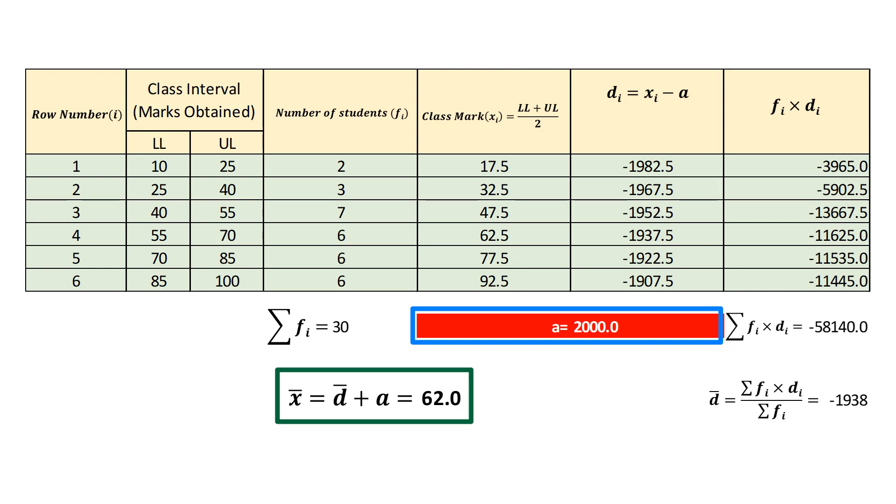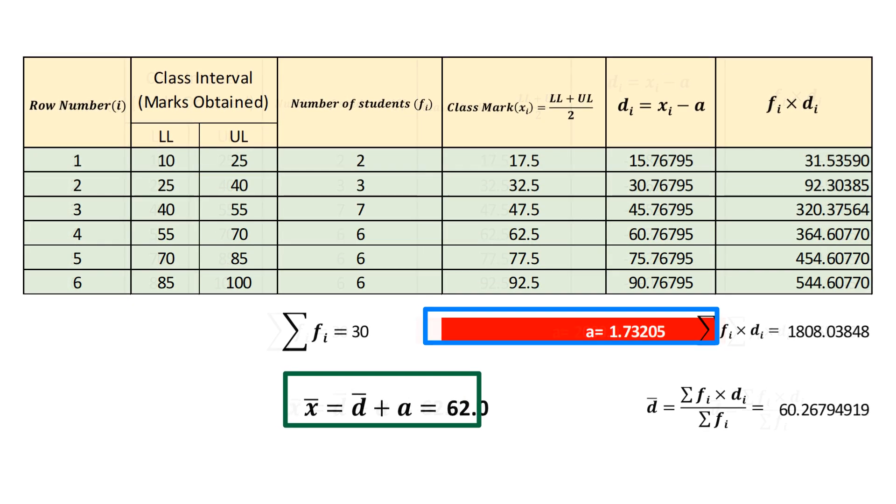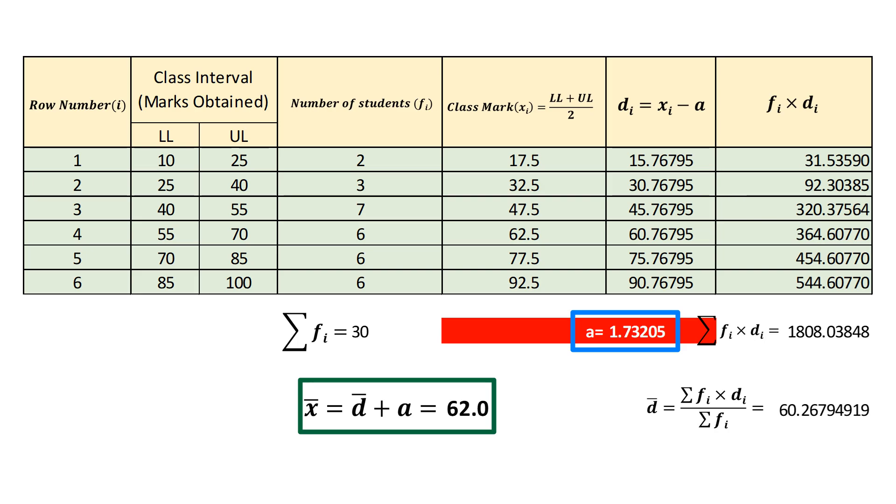This time I am going to test by taking a rational number, that is square root 3 and see what happens. The approximate value of square root 3 up to 5 decimal places is equal to 1.73205. We get same value of mean which equals 62.